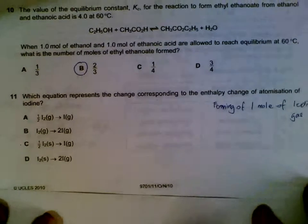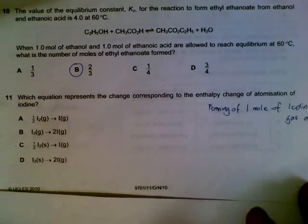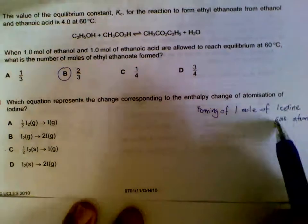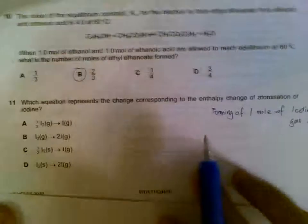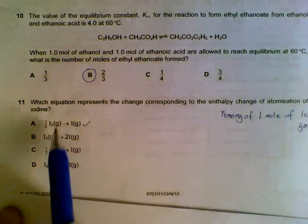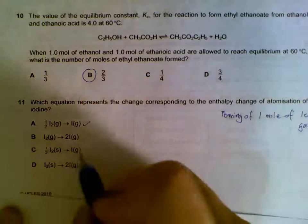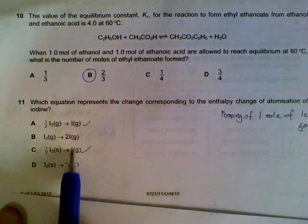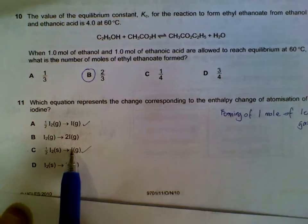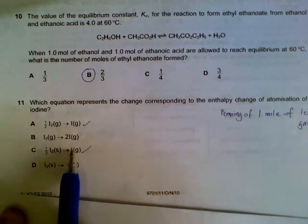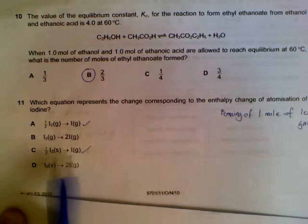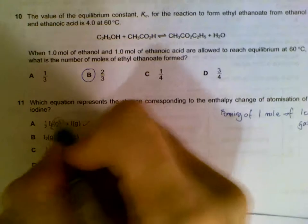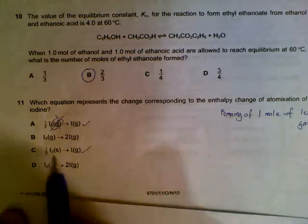Number 11. Which equation represents enthalpy change of atomization of iodine? Definition wise, it is forming of 1 mole of iodine gas atoms. So it could be A, which is 1 mole, or C, 1 mole of gas atoms. Then we have to know the second part of the definition. It has to come from the substance at its standard state. Iodine should be a solid at standard state conditions, not a gas. That's why it's C.